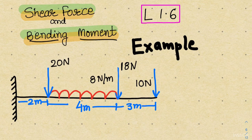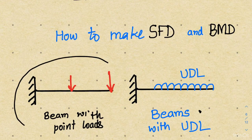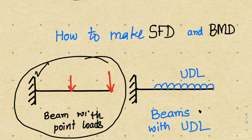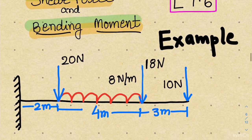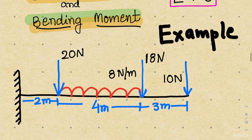Hello everyone and welcome back. In our previous classes we have seen how to make the shear force and bending moment diagram. This is a class where we are going to take a problem and solve the entire problem for shear force and bending moment, especially for a cantilever beam with point load and uniformly distributed load. We have seen problems for a cantilever beam with point loads, with UDL, and also mixed loading. This is a pure example-solving class.